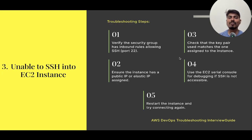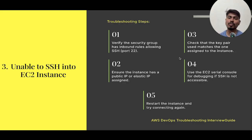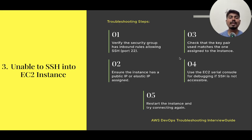The next question is: unable to SSH into an EC2 instance. If an interviewer asks that a teammate cannot SSH into your EC2 instance, the answer should be: verify the security group inbound rules are allowing SSH port 22. Check the security group and inbound rules on the EC2 instance, and use telnet from your local machine on port 22 to test.